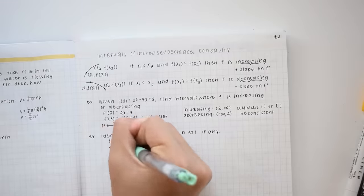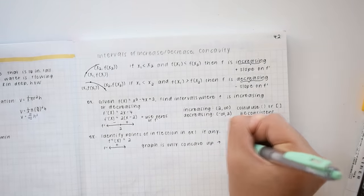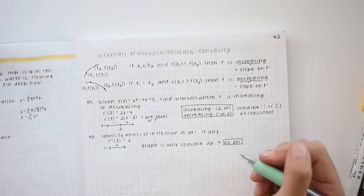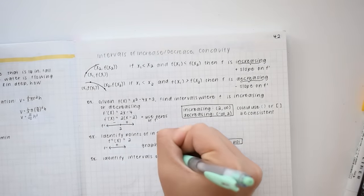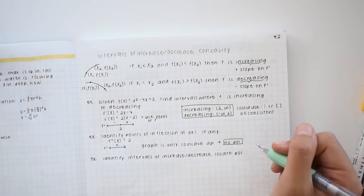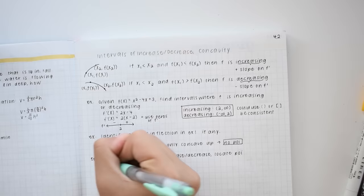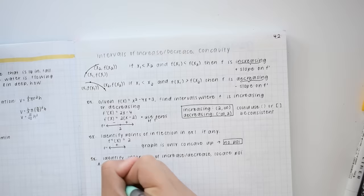After a few examples done with the whole class, we are given questions to work on by ourselves. So I just do these questions in my notes. And if I make mistakes, I go over them with whiteout and write in the correct steps and answers.